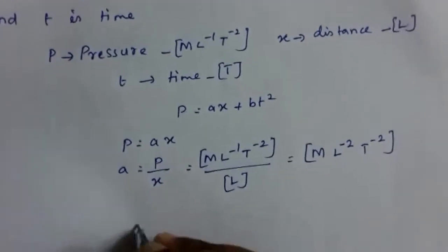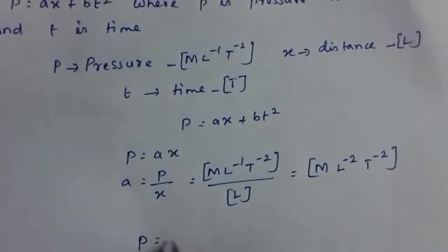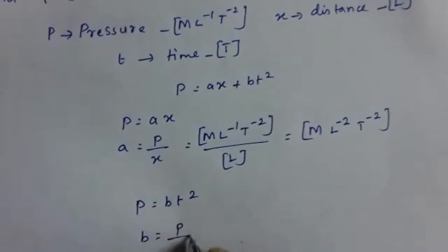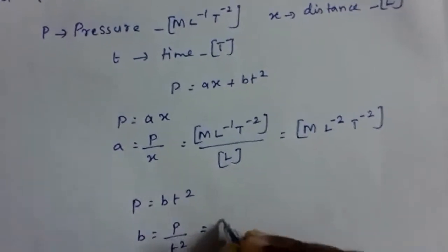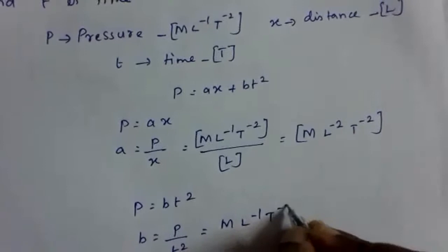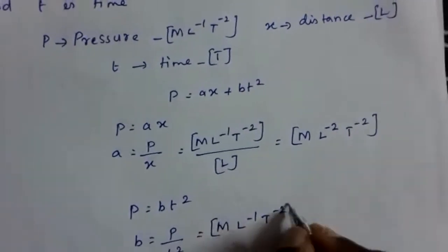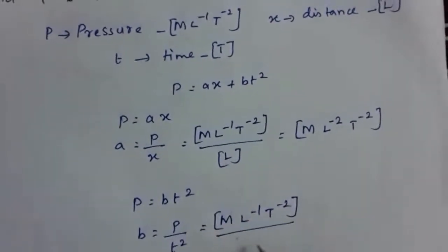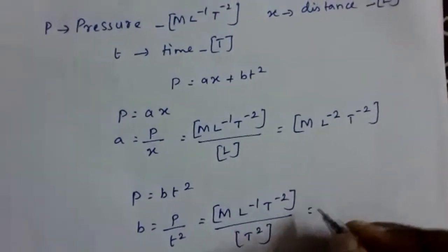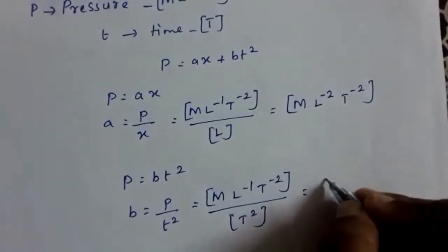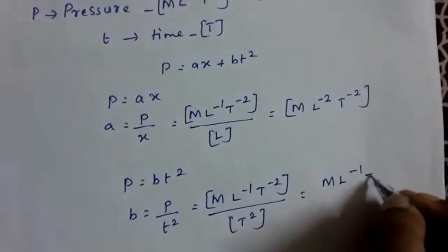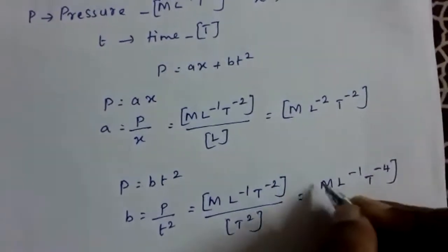Similarly, equating p with bt squared, b is equal to p by t squared. Writing the dimensions: M L raised to minus 1 T raised to minus 2 divided by T squared. Taking the denominator to the numerator, the dimension of b is M L raised to minus 1 T raised to minus 4.